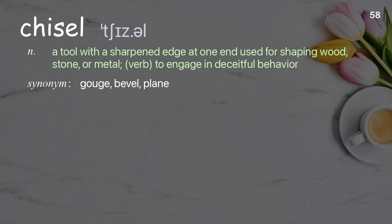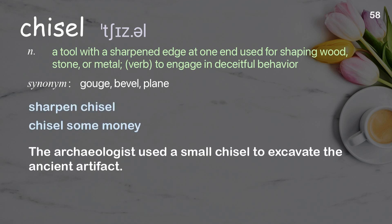Chisel: A tool with a sharpened edge at one end used for shaping wood, stone, or metal; (verb) to engage in deceitful behavior. Examples: sharpen chisel, chisel some money. The archaeologist used a small chisel to excavate the ancient artifact.